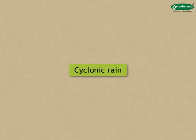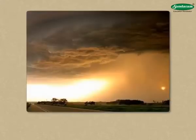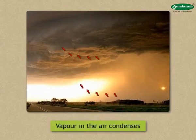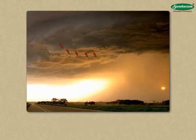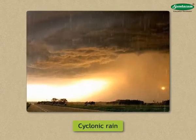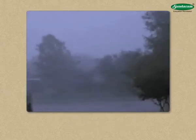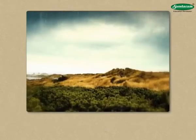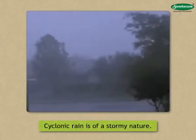Cyclonic Rain. When a cyclone is developing in a certain area, the air in the cyclone starts rising, its temperature decreases, and the vapour in the air condenses. Thus, it rains. This rain is called cyclonic rain. When a cyclone is moving from one place to another, it rains in the region it crosses. In the temperate zone, this type of rain is common. The torrid zone also receives cyclonic rain to some extent. It is of a stormy nature.